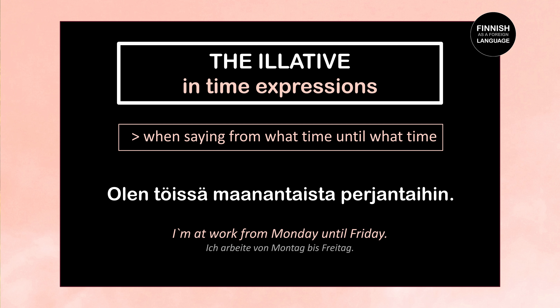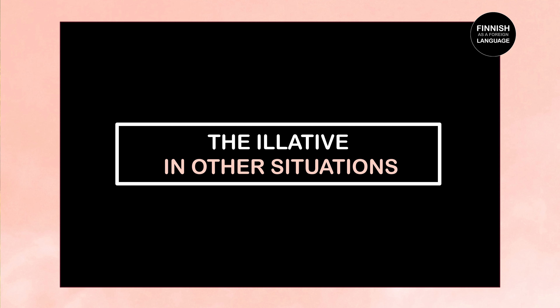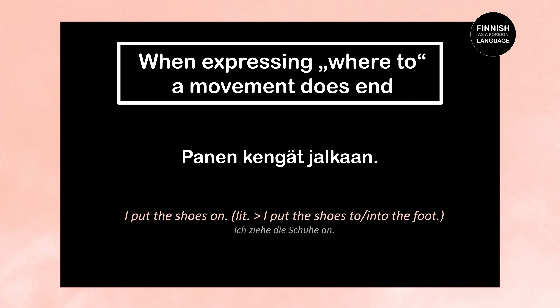The illative in other situations: when expressing where a movement ends, we use the illative. For example: Panen kengät jalkaan — I put the shoes on. Panen is the first person singular present tense of panna, meaning to put. Kengät is the nominative plural of kenkä, meaning shoe. Jalkaan is the illative of jalka, meaning foot. In Finnish you say 'I put the shoes onto my foot' rather than 'feet' — that is why we say jalkaan.